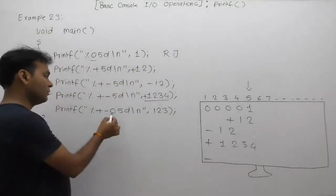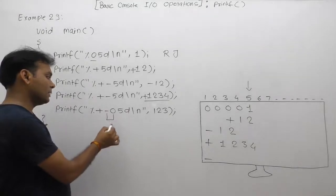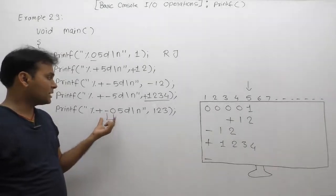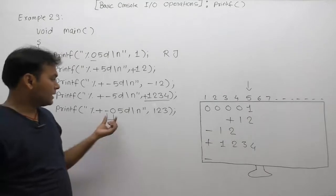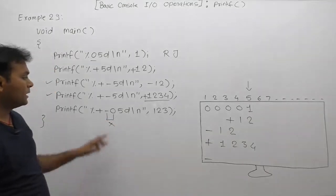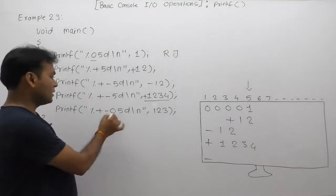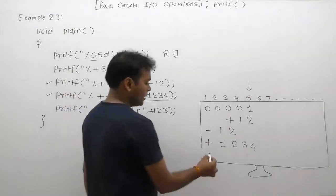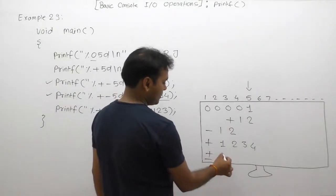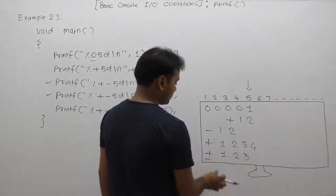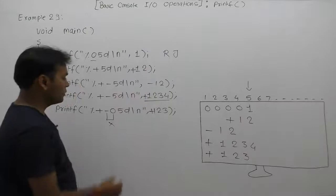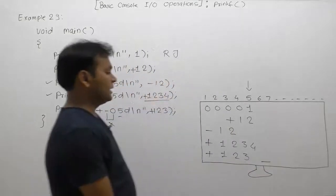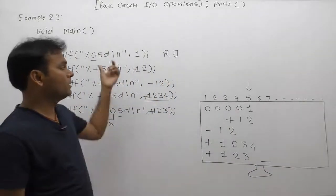Again, we are using 0, but 0 doesn't work with minus. Here, the default padding symbol is space, not 0. Even though we are supplying 0, it doesn't work with the minus specified flag. According to plus, the sign of the number is also displayed: +123, from left to right justified. The total width is 5, so the cursor will be shifted to the 6th position after the given width. This is the final result of the given program.